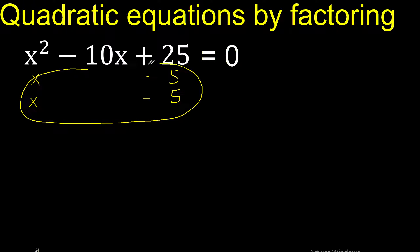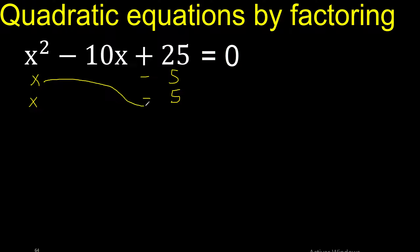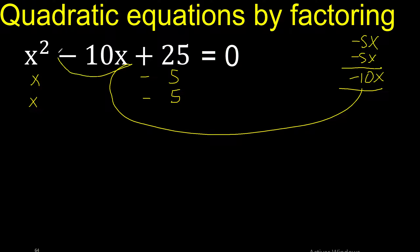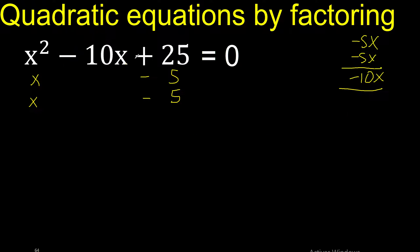Let's analyze if it is correct: x multiplied by minus 5, and here x multiplied by minus 5 gives minus 10x. Therefore it is correct.